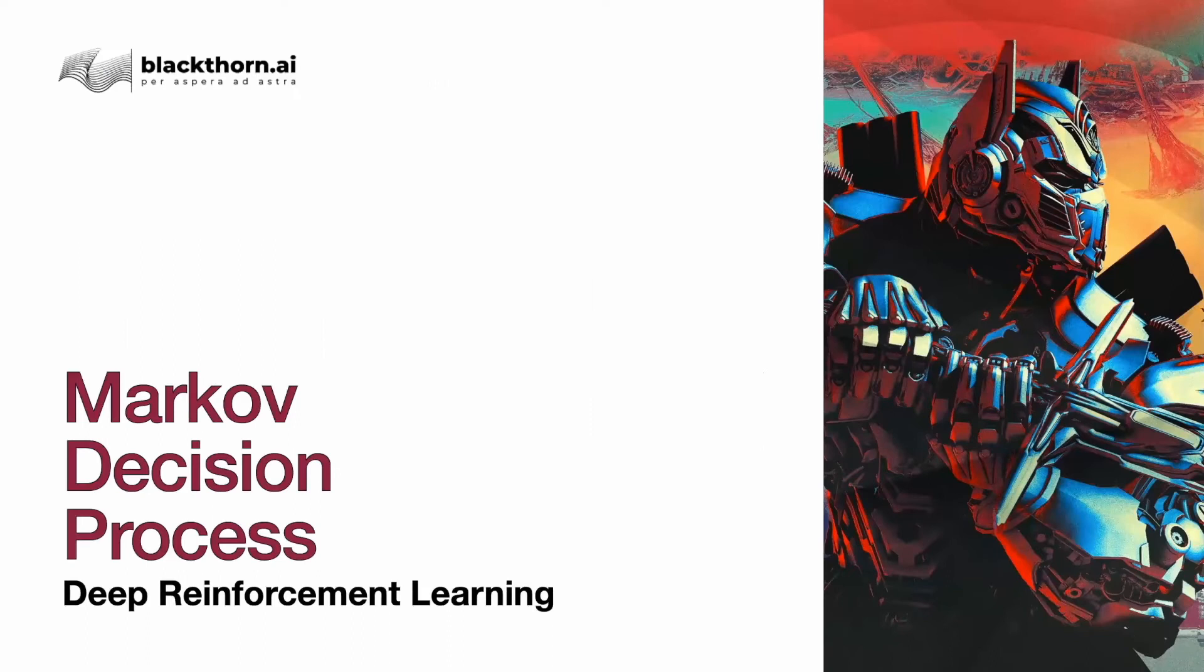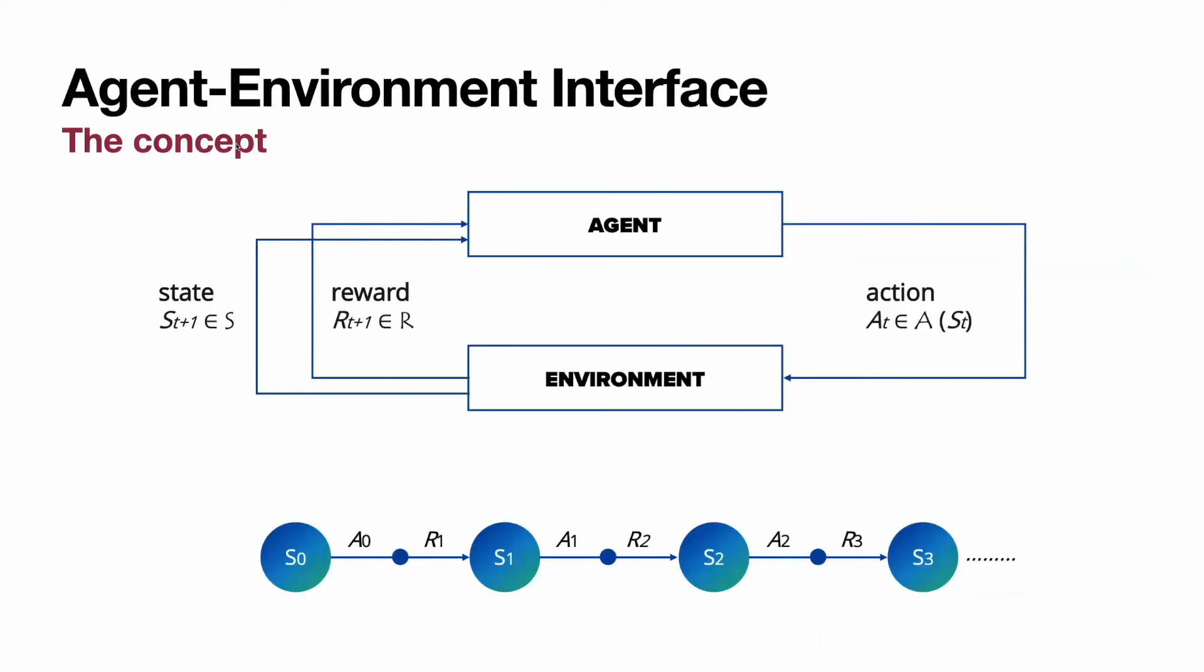We have to review the concept on which the field is built upon. It is Markov decision process. MDP works in the scope of agent-environment interface. Agent iteratively interacts with environment performing actions. Action at time step T is taken from a fixed set of actions A. By taking an action, agent receives from environment new state and a reward.